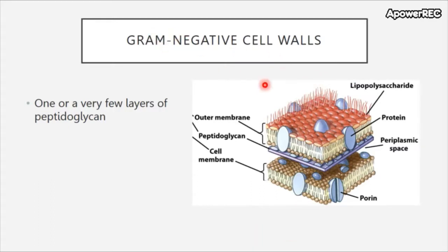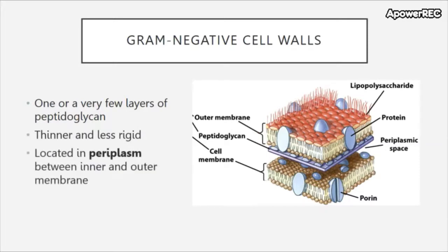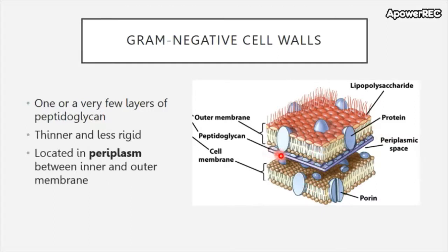Gram negative cell walls also have peptidoglycan, however they have fewer layers, so their cell walls tend to be thinner and less rigid. Gram negatives have a periplasm — a space sandwiched between two different membranes: an inner membrane (the plasma membrane) and an outer membrane. Gram positives do not have an outer membrane. The peptidoglycan lies within the periplasmic space. Note that in gram negative cells there is no teichoic acid.